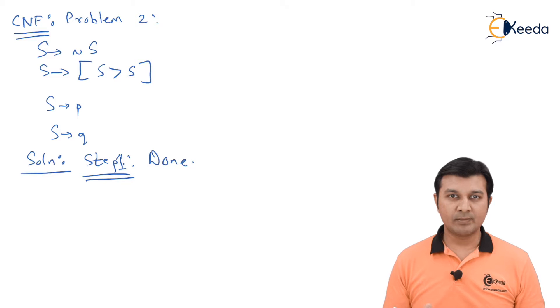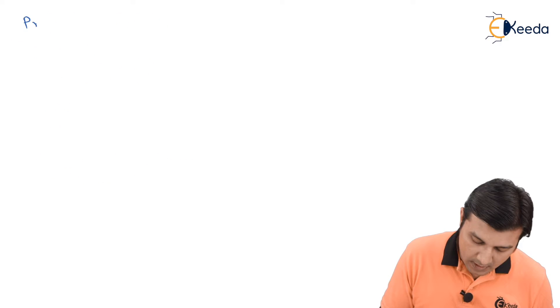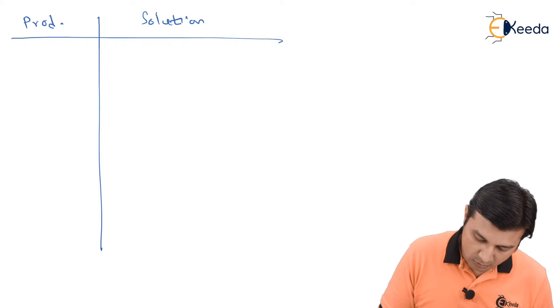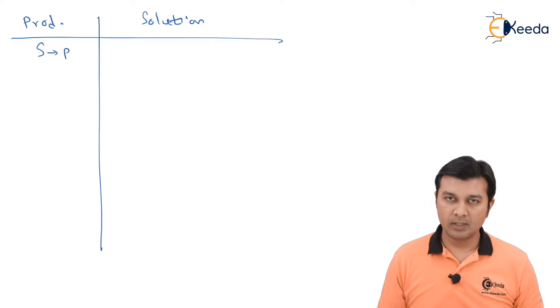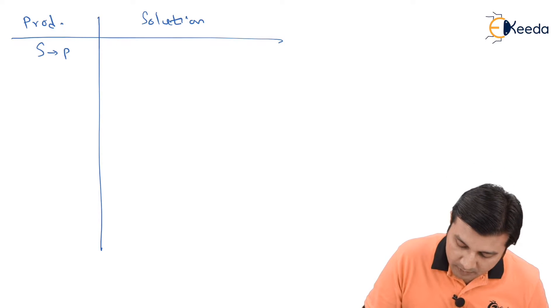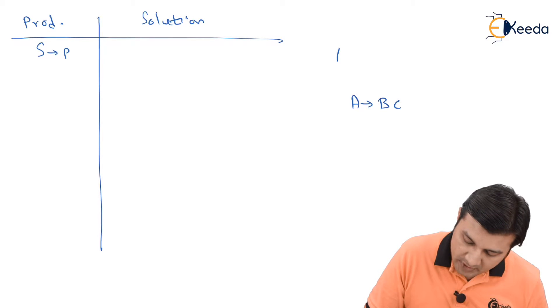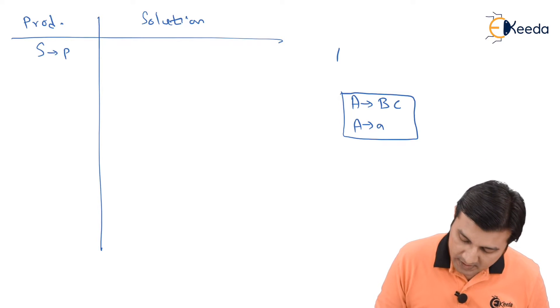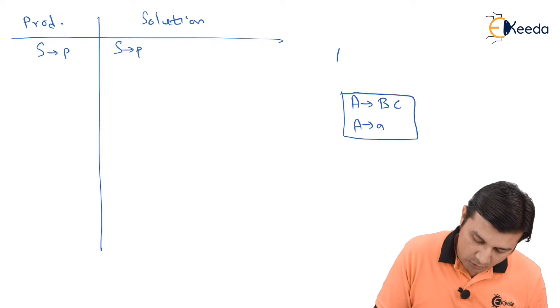Now, for step two and step three, which we always do in the combined fashion, you have to follow the strategy which I just suggested. Let's get started with that. I write my productions over here and I am going to write my solution over here. The first production is S gives small p. Before that, if you remember, my Chomsky form says the production should be of the form A gives BC or A gives me small a. This is just for reference. Now, S is giving me small p. It is in the Chomsky normal form. So we add on to the solution.